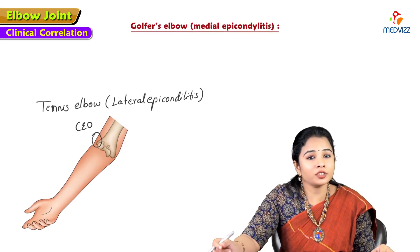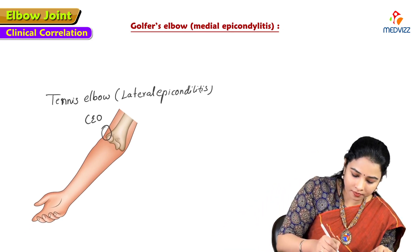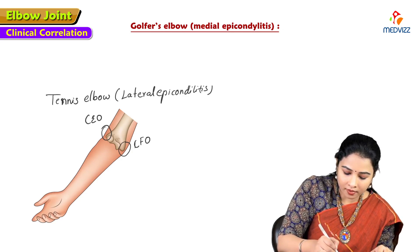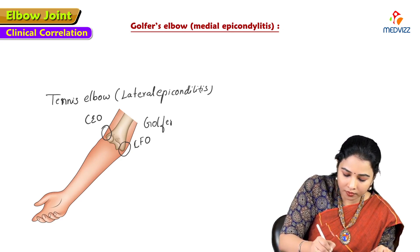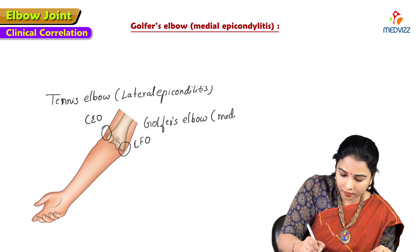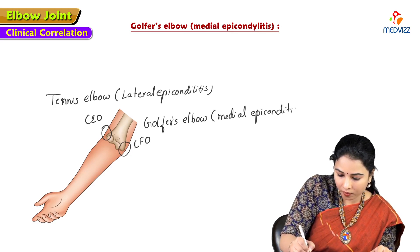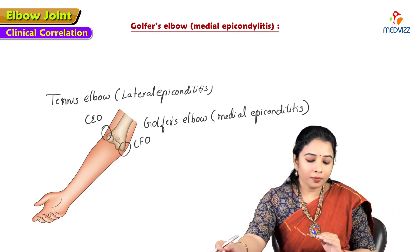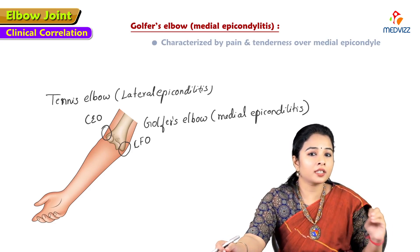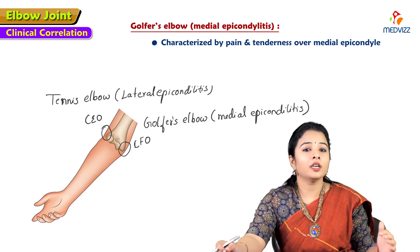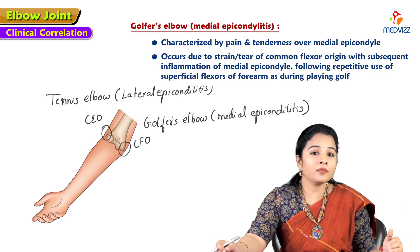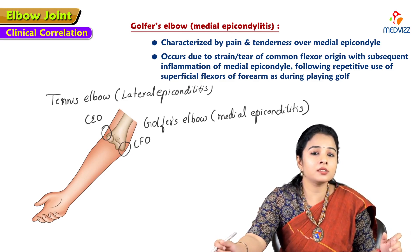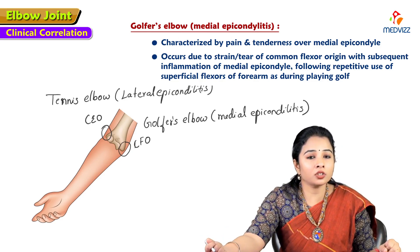Golfer's elbow is medial epicondylitis. It is characterized by pain and tenderness on the medial epicondyle of the humerus, occurring due to the strain or tear of the common flexor origin with subsequent inflammation following repeated use of the superficial flexor muscles during playing golf.